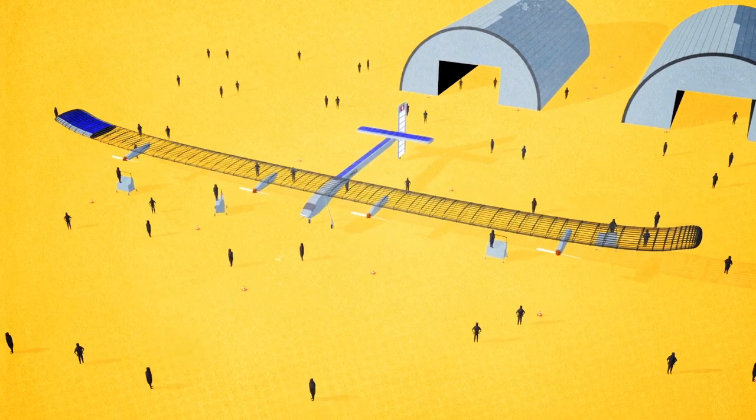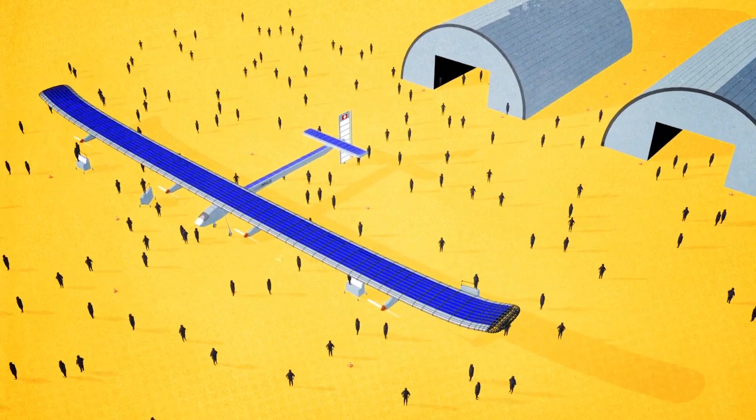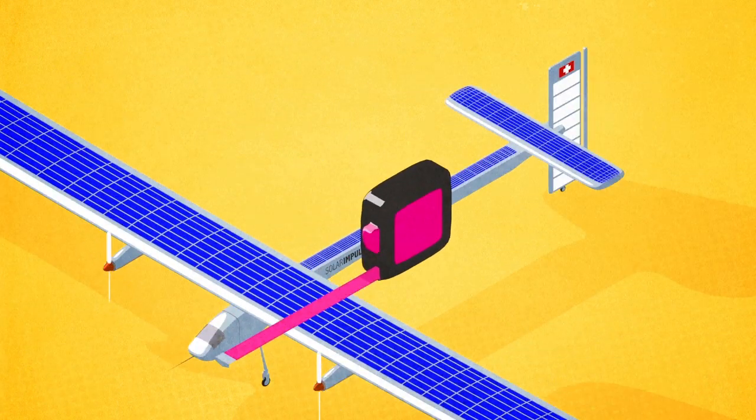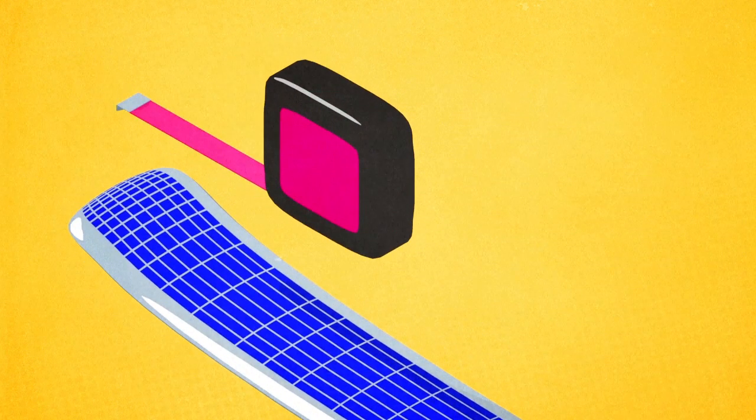The revolutionary airplane, 80% of it made up of carbon fibre, took a team of 80 technicians four years to build. With a 72-metre wingspan, it measures 22 metres long and weighs just 2.3 tonnes.